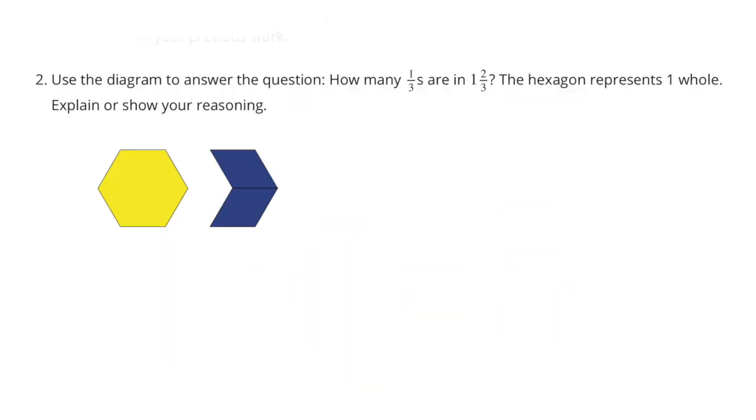Number two. Use the diagram to answer the question. How many thirds are in one and two-thirds? The hexagon represents one whole. Explain or show your reasoning.